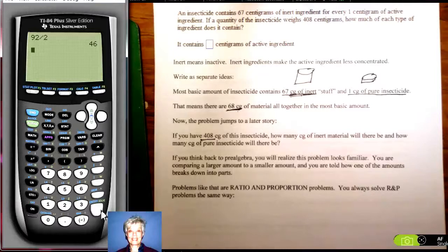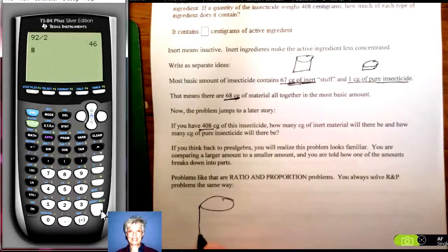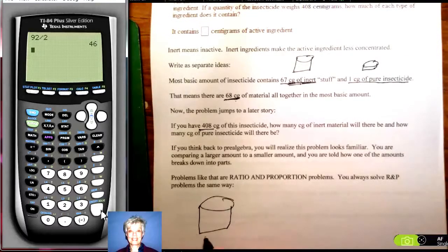Now if a quantity of insecticide weighs 408 centigrams, how much of each type of ingredient does it contain? So knowing that you have this 67 to 1 ratio, somebody brings you 408, a container of 408 centigrams.